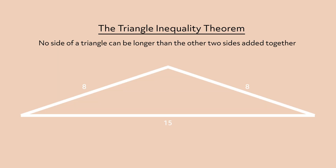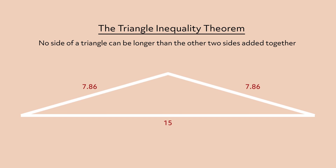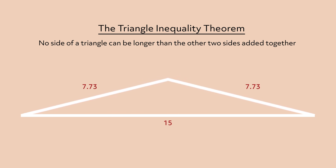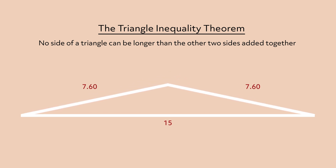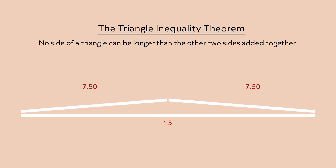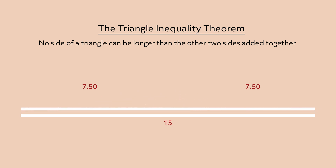Let's look at this triangle. As you can see, one of the sides is a lot longer than each of the other two sides. But when we measure the sides, the length of the smaller sides added together is still longer than the length of the longer side. If I pushed the top of this triangle lower, the sides would get a bit shorter, but they'd still add up to a little more than 15. If I flattened them completely so that they'd form a straight line segment, they would add up to 15, but then we wouldn't have a triangle anymore.